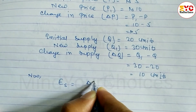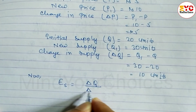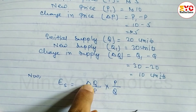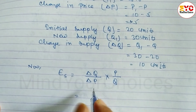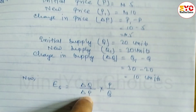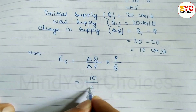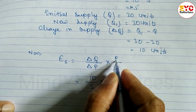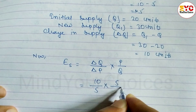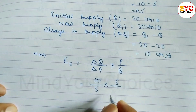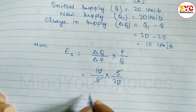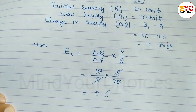Now we apply the formula for elasticity of supply: ES = (ΔQ / ΔP) × (P / Q). Here ΔQ = 10, ΔP = 5, initial price P = 5, and initial quantity Q = 20. So ES = (10/5) × (5/20). The 5s cancel, giving 1/2 = 0.5.